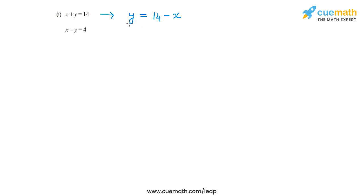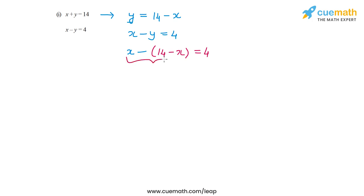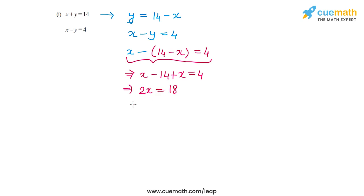Now I need to substitute this value of y into the second equation. The second equation is x minus y equal to 4. So instead of y, I write 14 minus x. So x minus (14 minus x) equal to 4. This is an equation in x alone. Opening the bracket, I get x minus 14 plus x equal to 4, or 2x equal to 18, or x equal to 9.